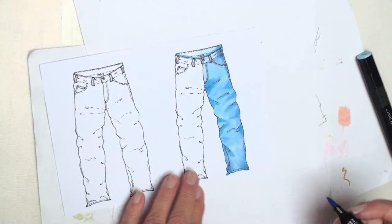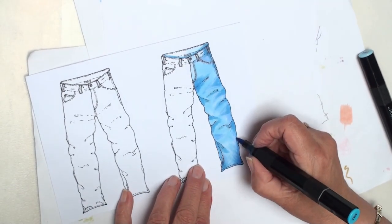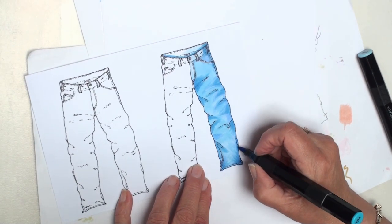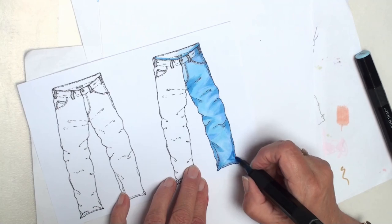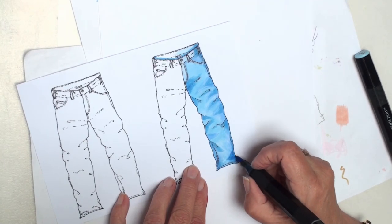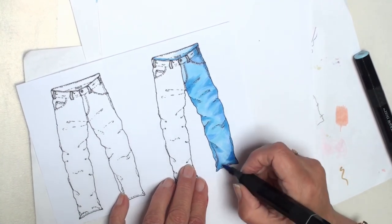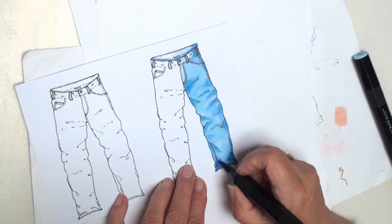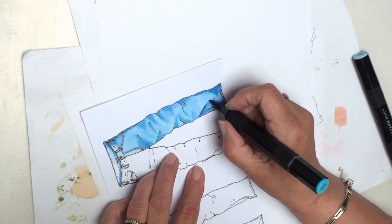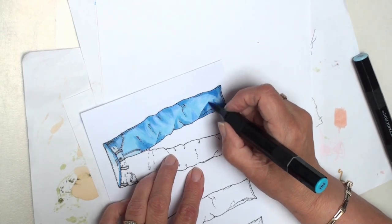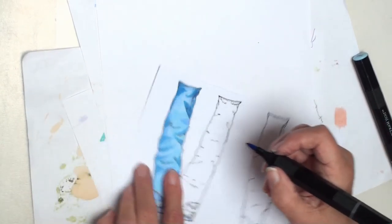Now once you've blended those colors in you may have lost a little bit of your shadow. So you can always go back in with your darker color just to reinforce the shadows again. So you're just going to blend it out like you did before. And that will get rid of any blotchiness in your coloring.